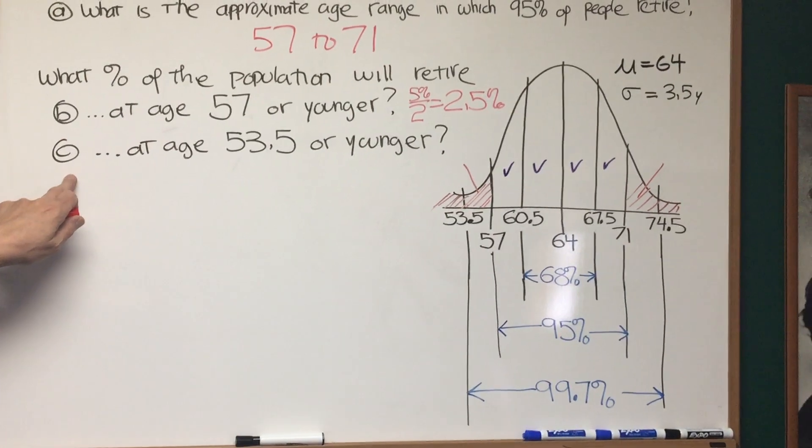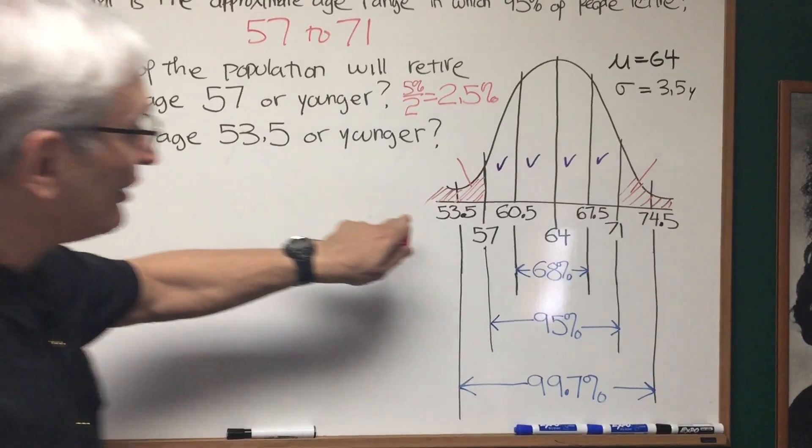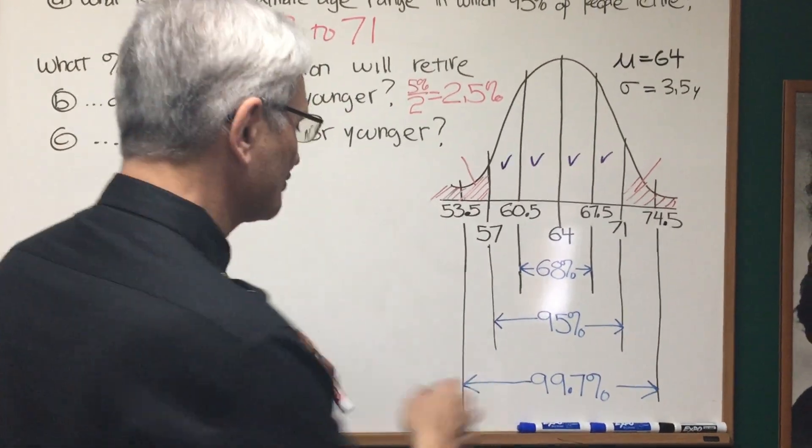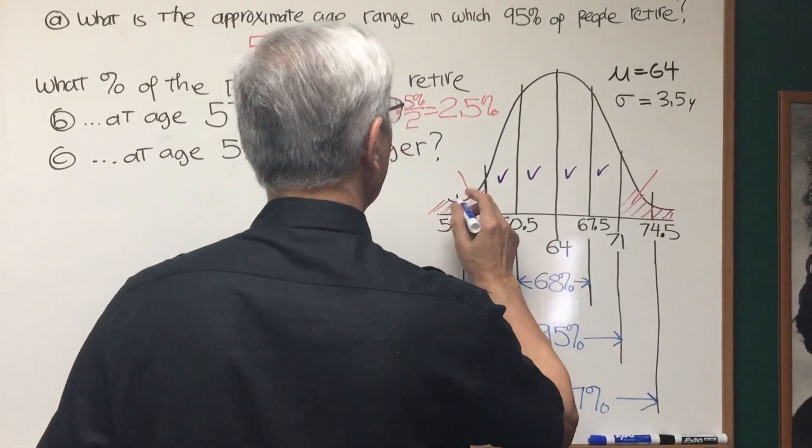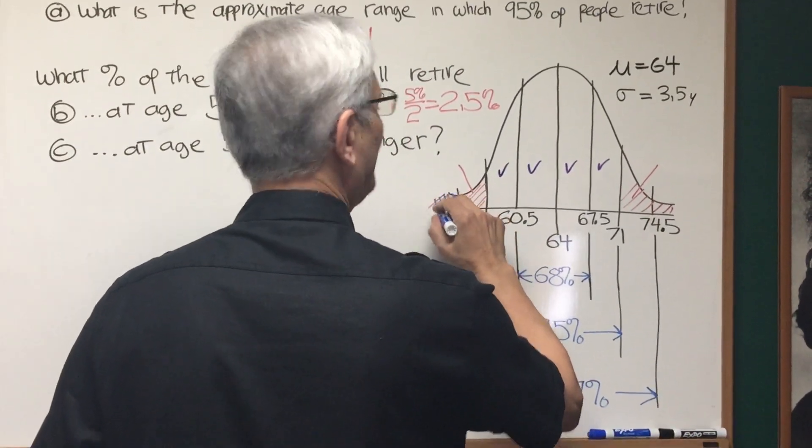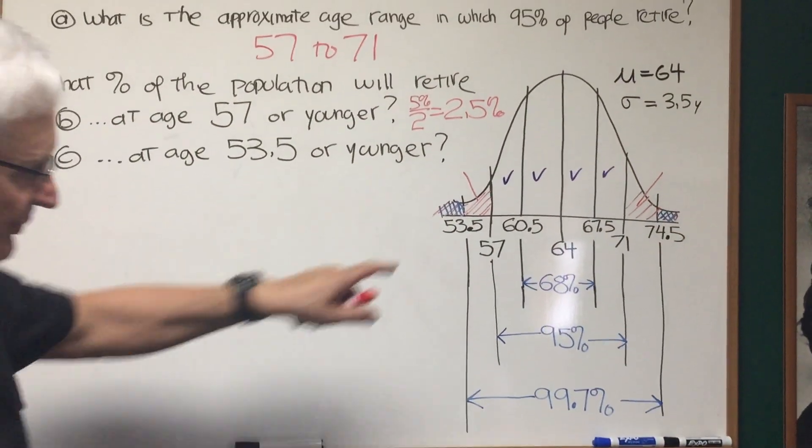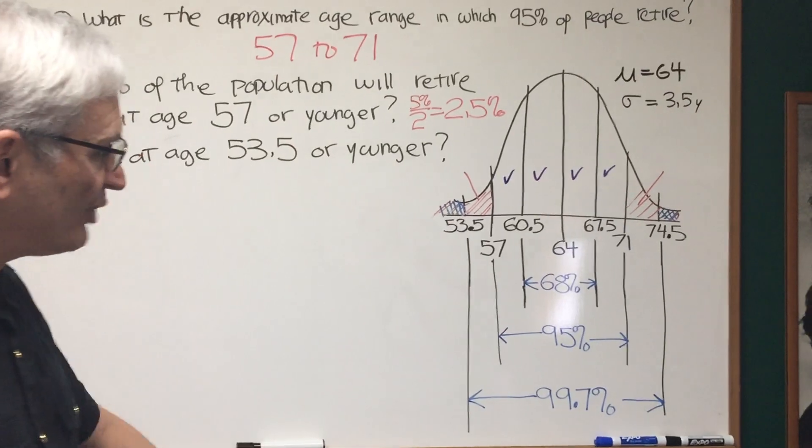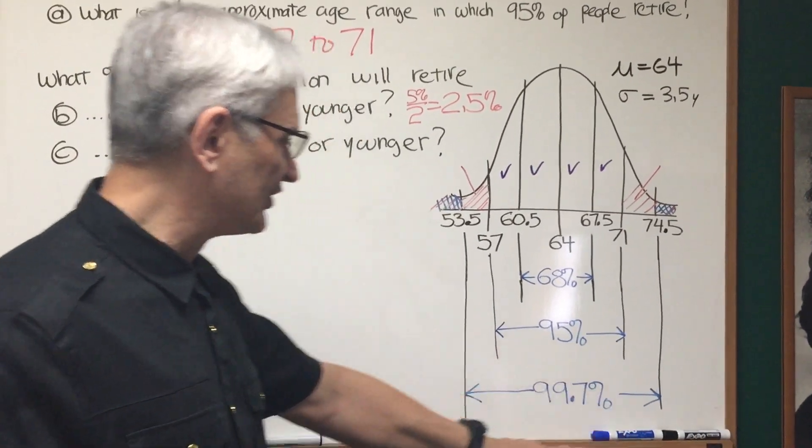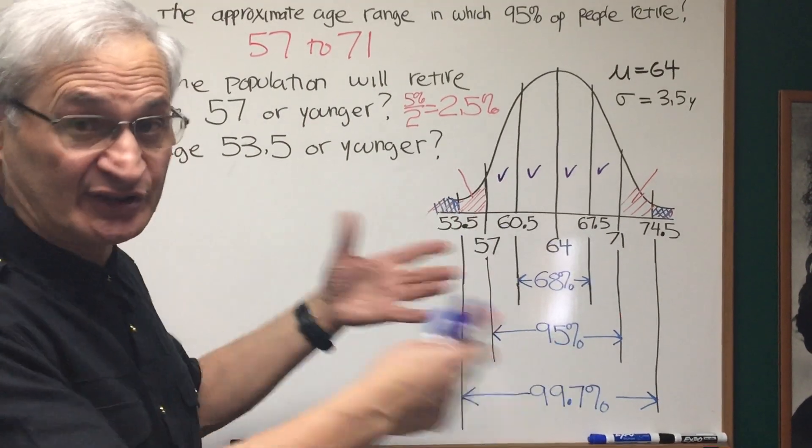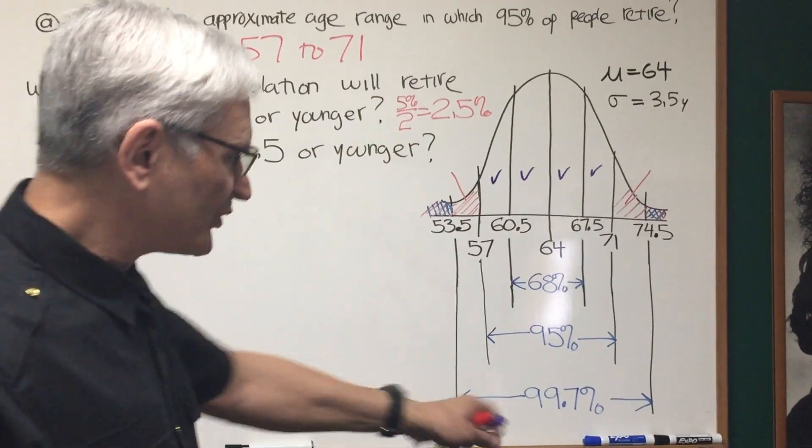Finally, part C. What percent of the population will retire at 53.5 or younger? Well, 53.5, let's draw in blue the portion of the normal distribution curve we're looking for. It's this portion right here, this tail end. That's well beyond the third standard distribution. We're just looking at one portion over here. Well, that's going to fall under the interval of the normal distribution curve that falls three standard deviations from the mean, from 53.5 to 74.5. So what's remaining?